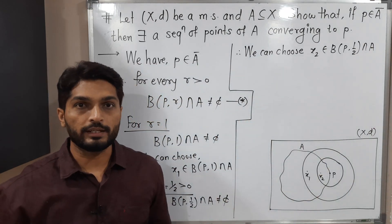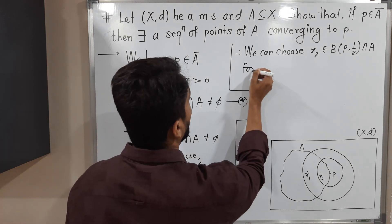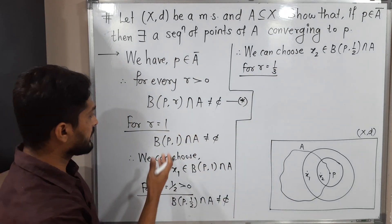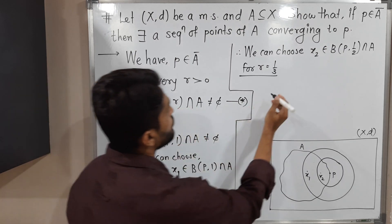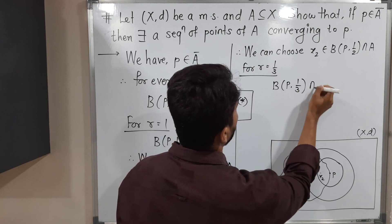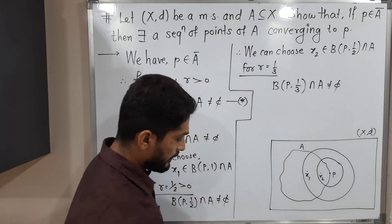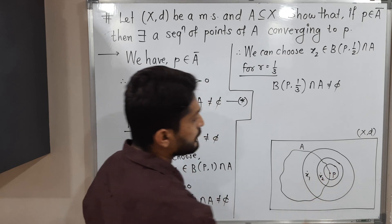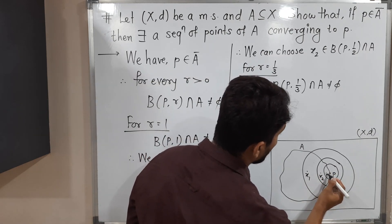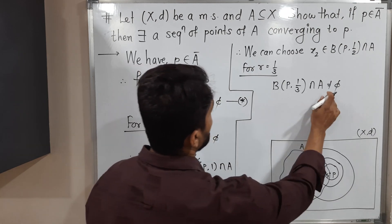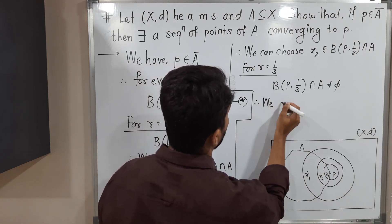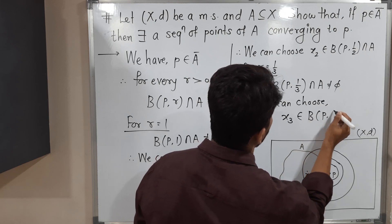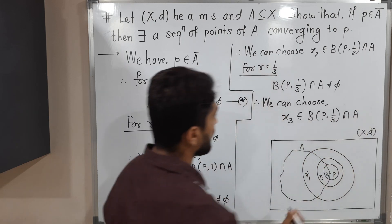I will repeat the same story for r equal to 1/3. It is true for every r, so it is our choice. I am selecting r equal to 1/3. So B(P, 1/3) intersection A is not equal to empty. That means again we are reducing the value of r and we get a comparatively small ball. The intersection is still non-empty. So here we can select some point X3. Therefore, we can choose X3 belonging to B(P, 1/3) intersection A.